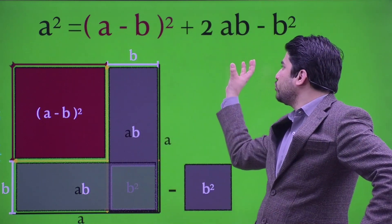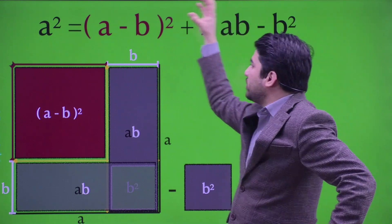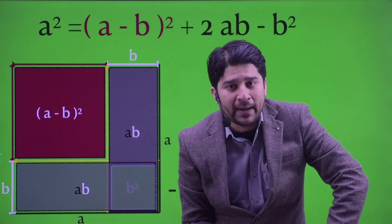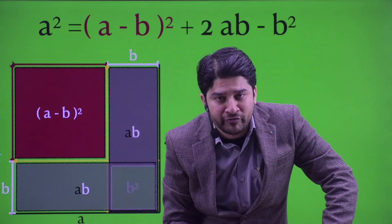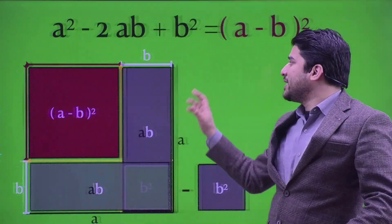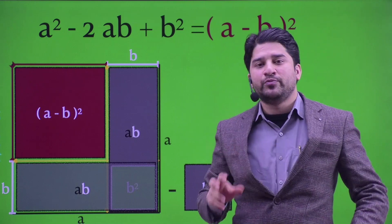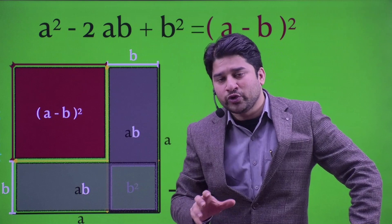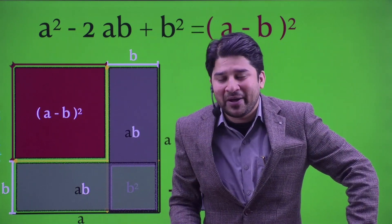Now I want you to transpose 2ab to the left and minus b square to the left. When plus 2ab is transposed to the left, it becomes minus 2ab. And minus b square when transposed to the left becomes plus b square. So: a square minus 2ab plus b square equals (a minus b) whole square. This was the visual understanding of (a minus b) whole square.